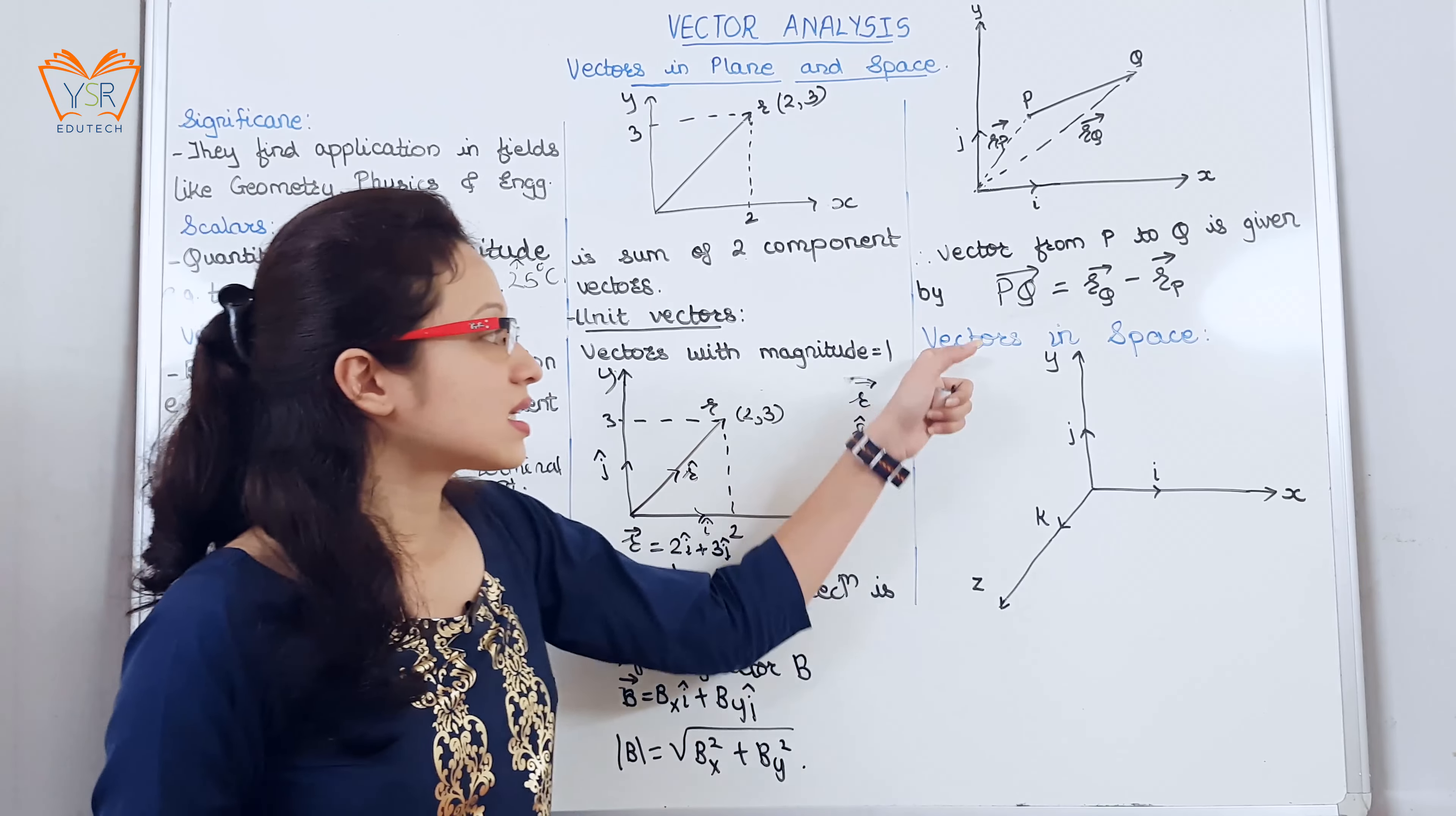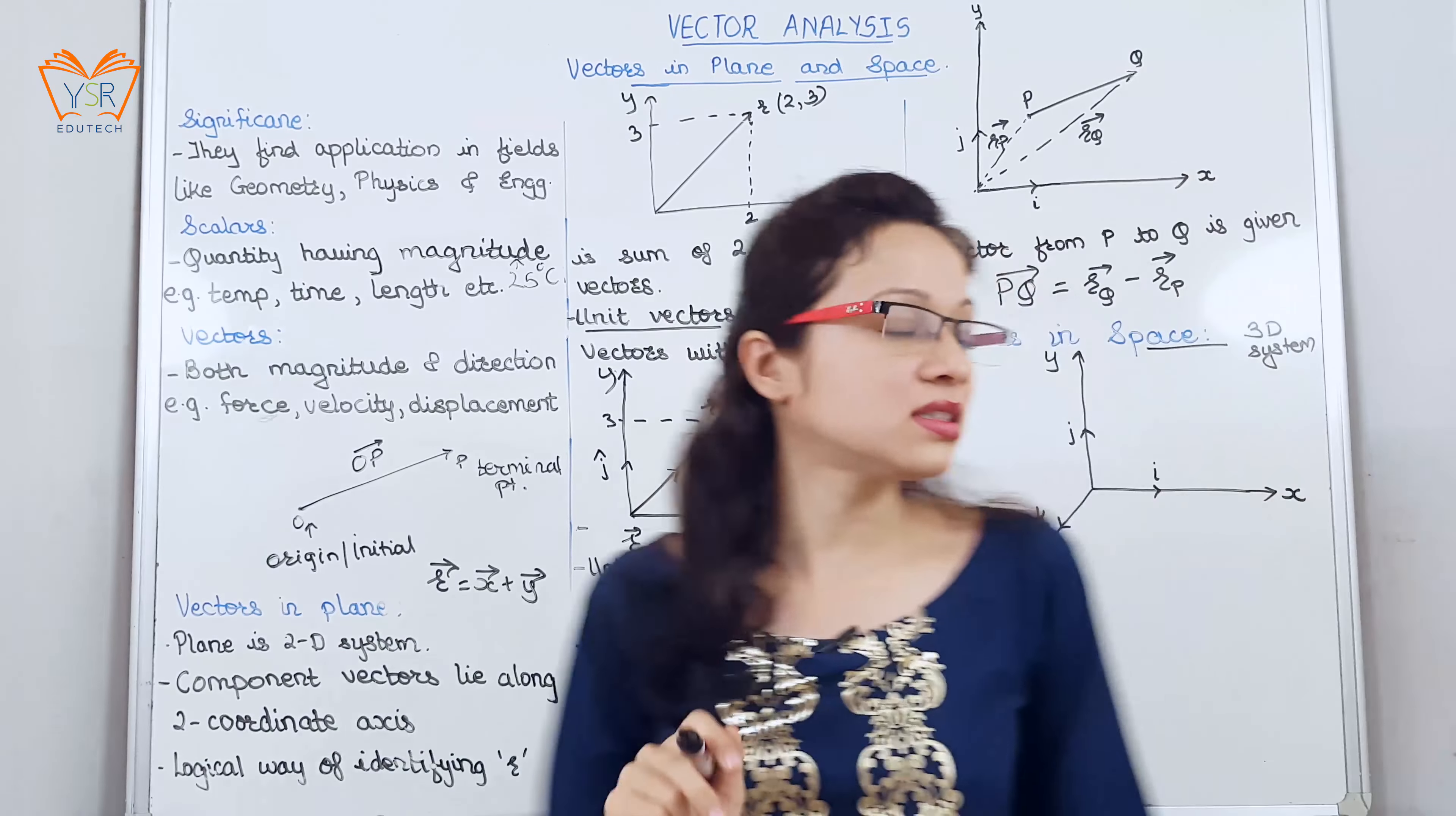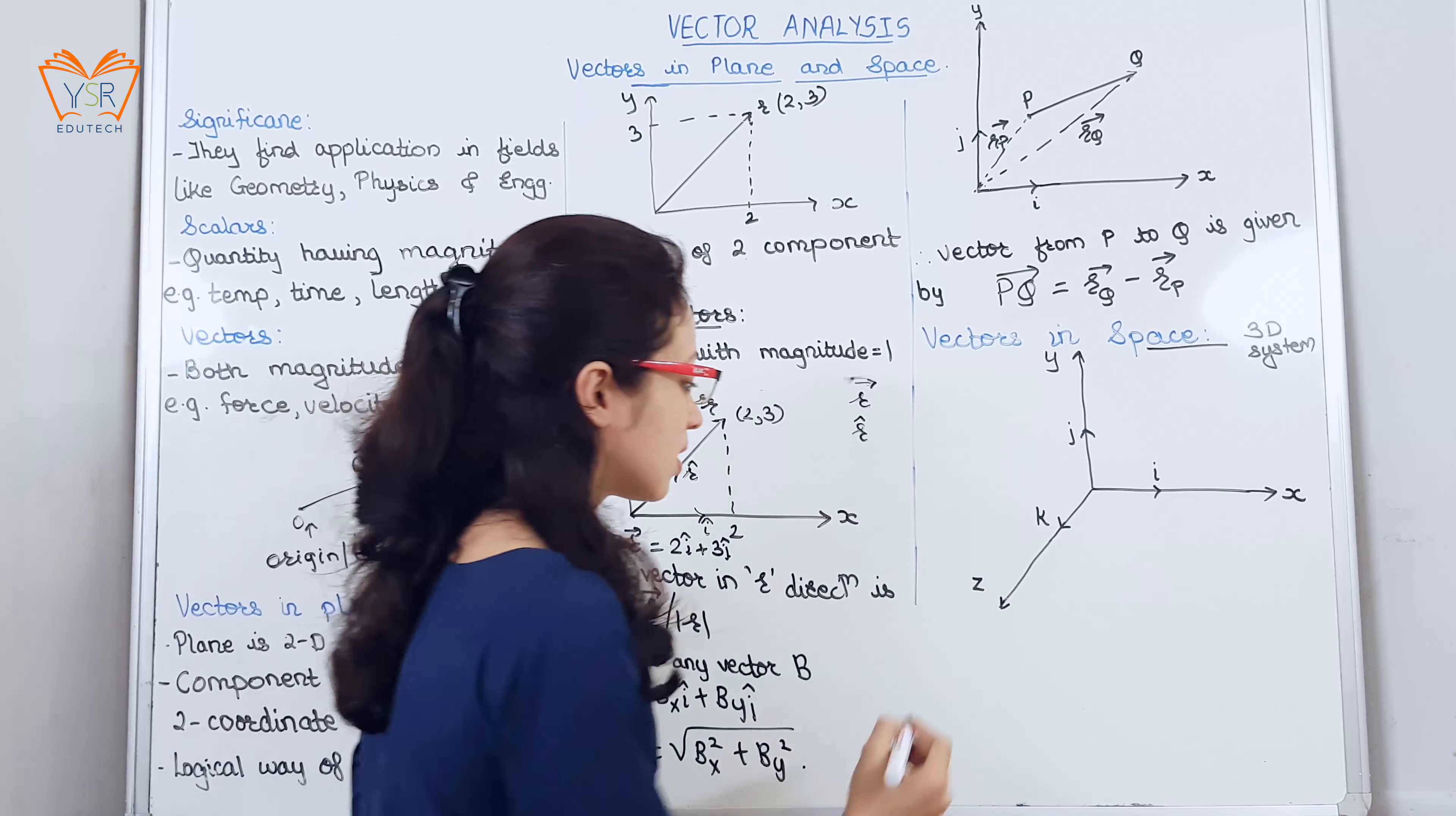Let us study the last point vector in space. Now space is a 3d system. We have considered 3 coordinate axis that is x, y and z. Let i, j and k be the unit vectors along these 3 axis.